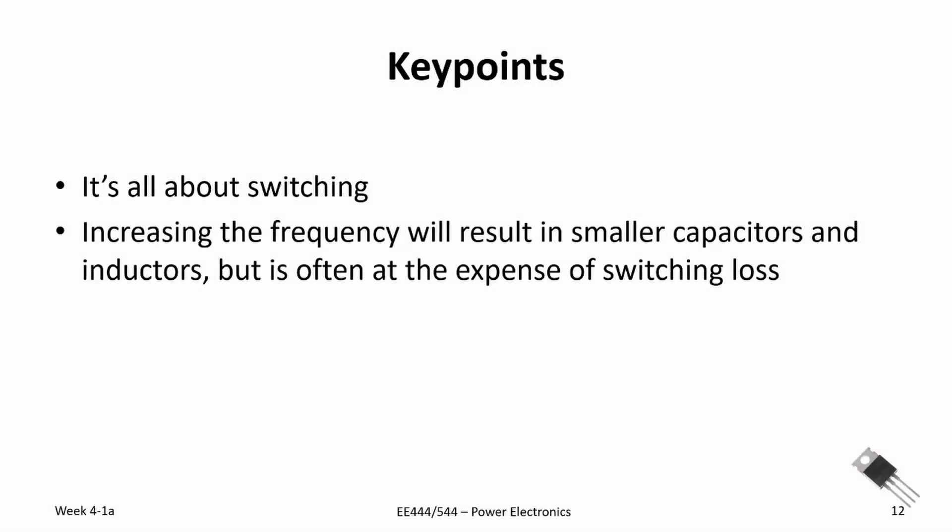Let's review the key points. It's all about switching. We looked at high-side and low-side switching, and in this video we showed that one way to think about the buck converter is as a DC chopper circuit. For sizing the capacitor, increasing the PWM switching frequency can result in a smaller capacitor and a smaller inductor — but as we'll show in future videos, it comes at the expense of switching loss in the high-side and low-side switches. Thanks for watching; in the next videos we'll start looking at losses and efficiency in the buck converter.